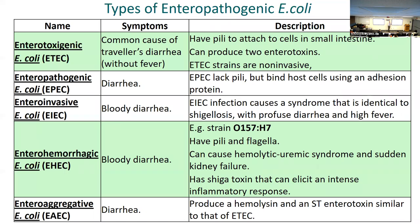EHEC — enterohemorrhagic E. coli — is different: hemorrhagic means bleeding, and it's associated with fecal matter from cows. That's why we see it in food recalls — manure used to fertilize crops can sometimes contaminate vegetables via flooding. In Canada we're not usually concerned about human fecal contamination because we don't use human fecal matter to fertilize food and we have good sanitation systems.